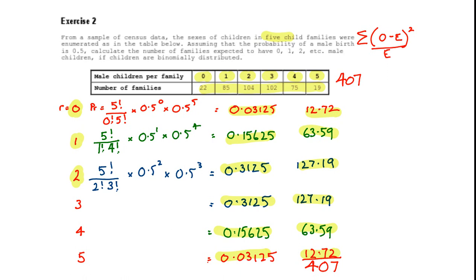of r equals 0 that is going to be the observed value is 22 over here. The expected value is 12.72. I'm going to square that and divide by 12.72. And if I do that I will find that my answer is 6.77. Then for the next calculation of chi